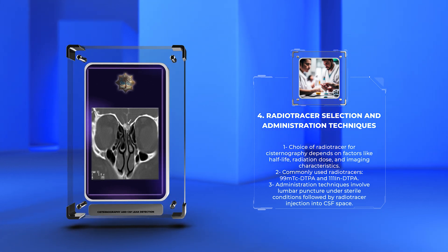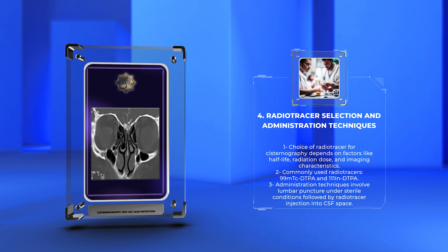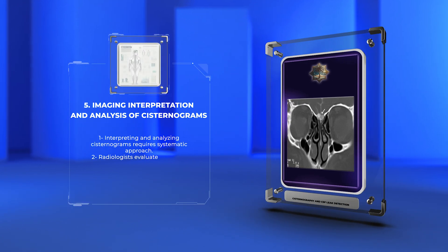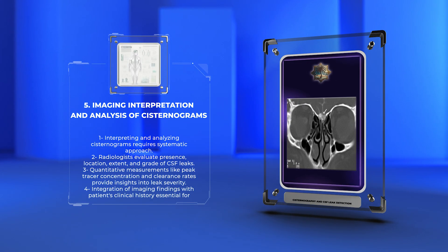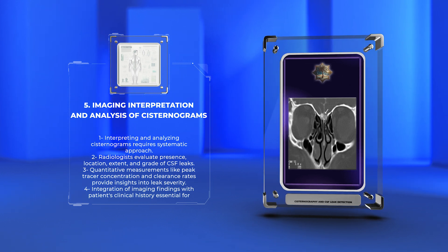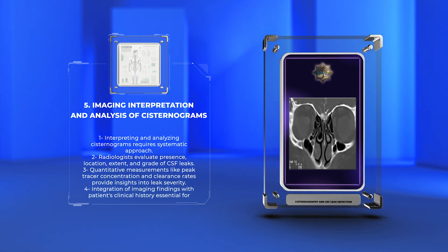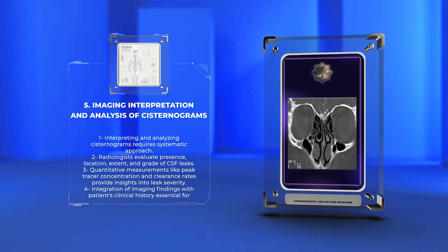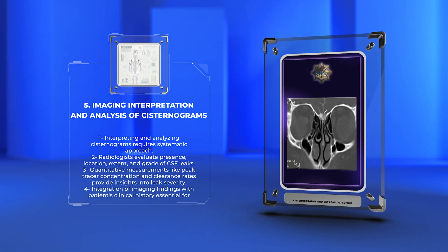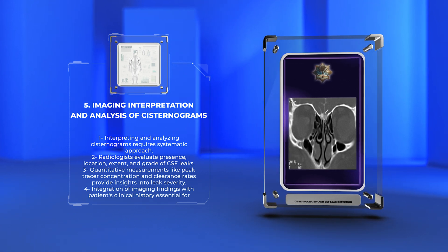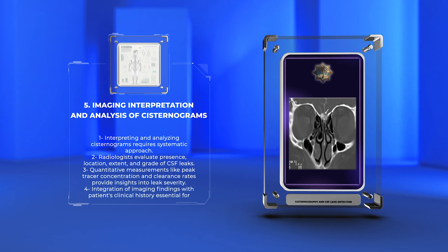Transition shot — the camera shows the professor demonstrating lumbar puncture and radiotracer injection techniques on a mannequin. Interpreting and analyzing cisternograms requires a systematic approach. Radiologists must evaluate the presence and location of CSF leaks, as well as the extent and grade of leakage. Quantitative measurements, such as peak tracer concentration and clearance rates, can provide valuable insights into the severity of the leak. Integration of imaging findings with the patient's clinical history is essential for accurate diagnosis and treatment planning.